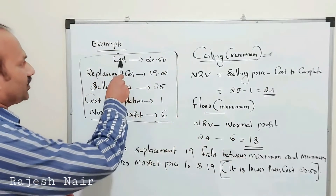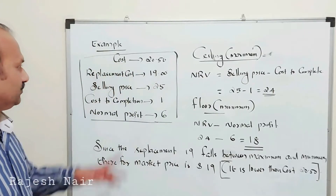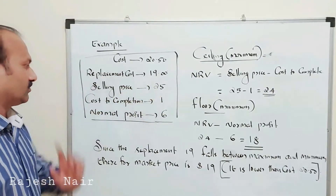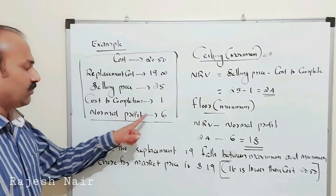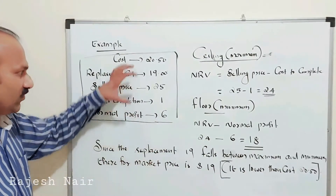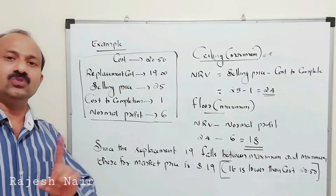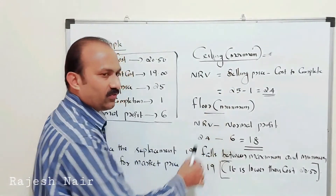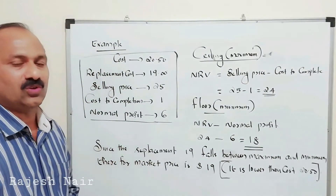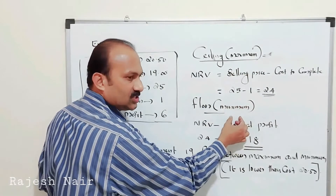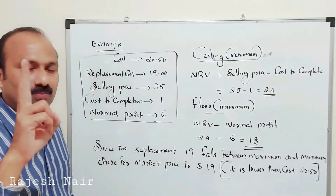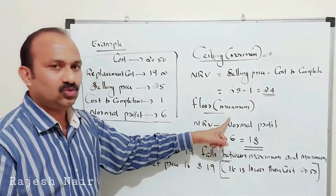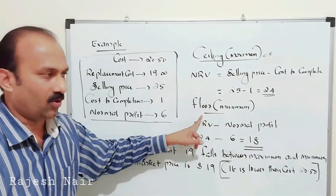Here is an example. The cost of the product is $20.50. The replacement cost of the inventory is $19. The selling price of the product is $25. Cost to completion is $1. Normal profit charged is $6. From this information, what is the lower of cost or market value? We need to find out the ceiling value and the floor value. The replacement cost does not exceed the ceiling and does not fall below the minimum.